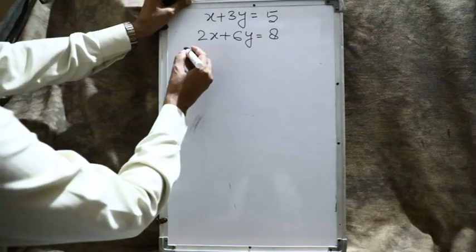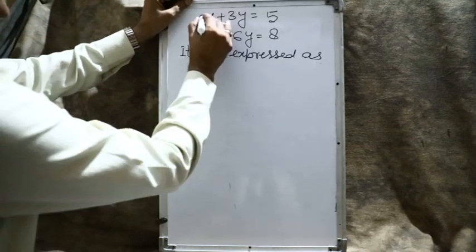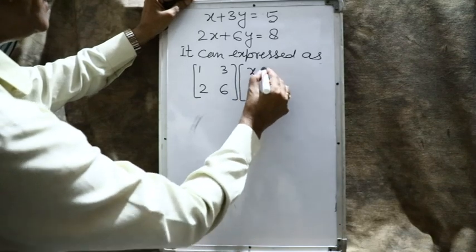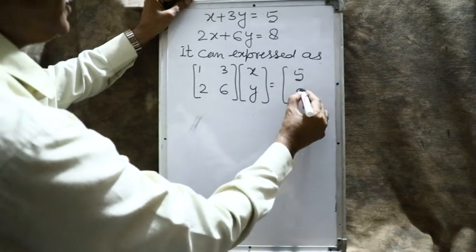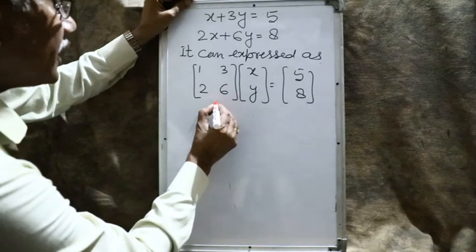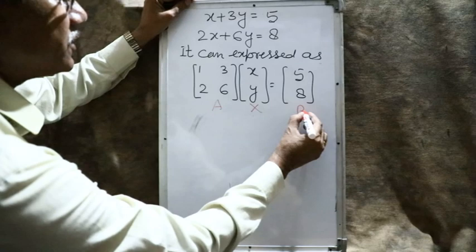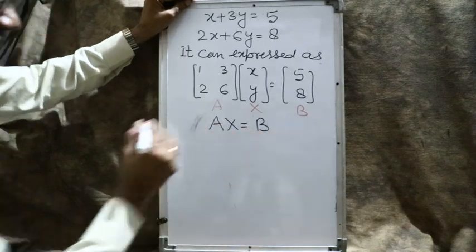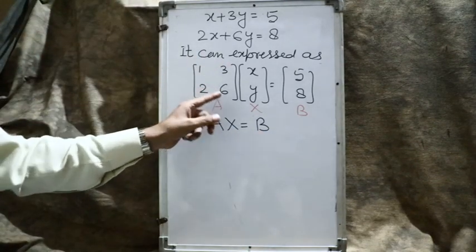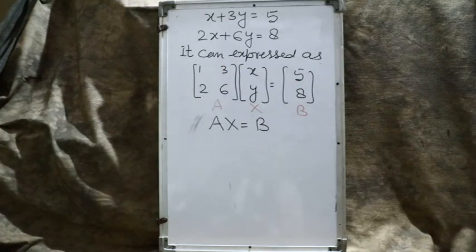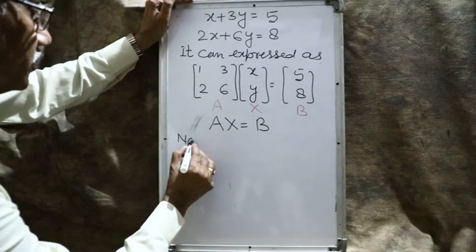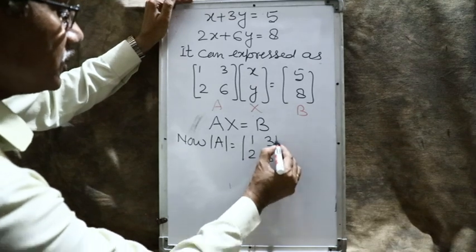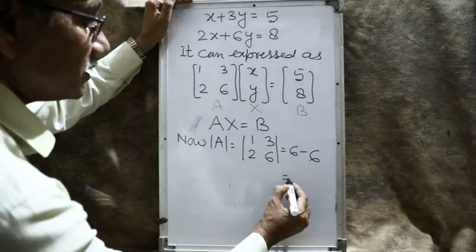The given system can be written in matrix form as [1, 3; 2, 6][x; y] = [5; 8]. This is written as AX = B, where A = [1, 3; 2, 6], X = [x; y], and B = [5; 8]. Now, determinant of A = 1×6 − 3×2 = 6 − 6 = 0. So it is zero, which means this matrix is a singular matrix, and therefore A inverse will not exist.